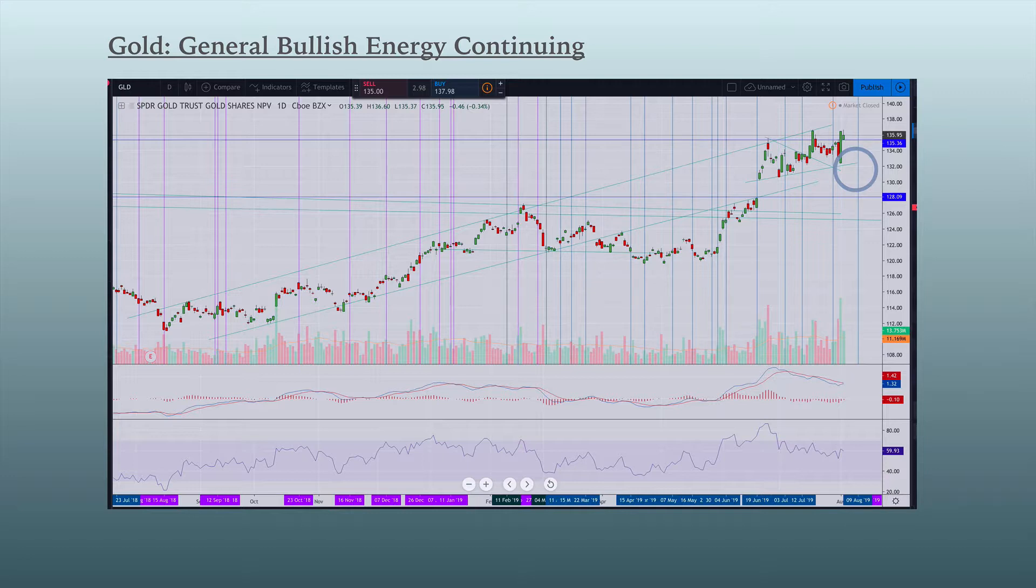In general we have bullish energy taking place in the gold chart. I would say generally speaking through September. And I haven't drawn them in, but we had a nice bounce off this trend line here, regardless of the fundamentals and the news and so forth. We've had a bounce. We are in a sort of neutral territory in the momentum indicators, and we have supportive astrology continuing in this chart.